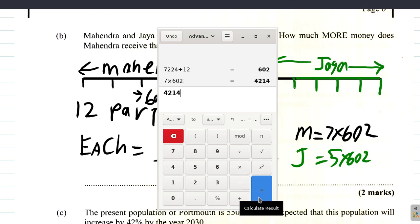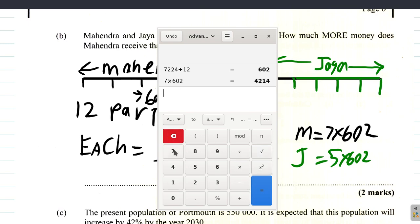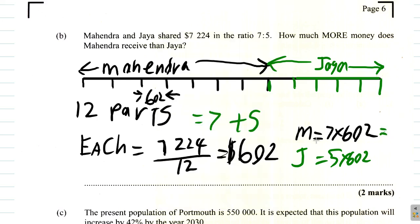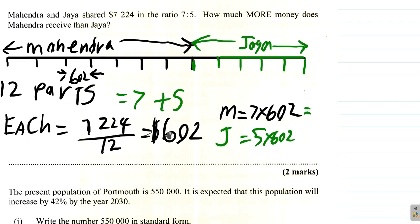Back to the calculator: 7 times 602 equals $4,214. And 5 times 602 equals $3,010. So Mahendra receives $4,214 and Jaya receives $3,010.